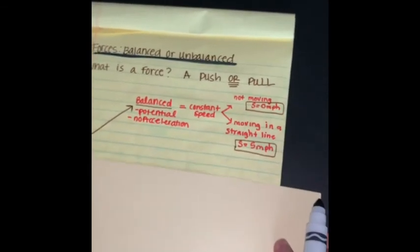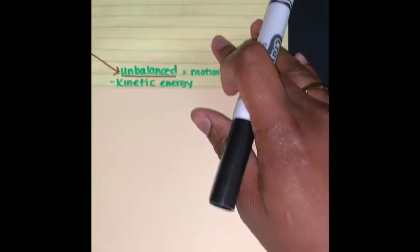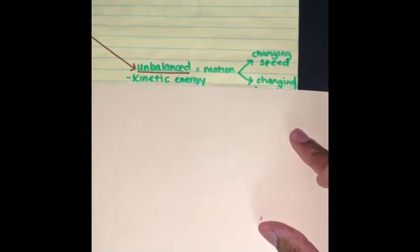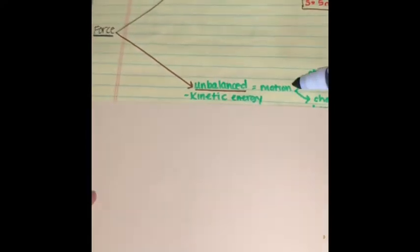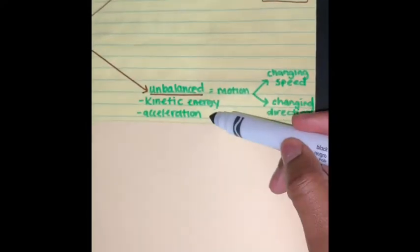Then, we will go down to the unbalanced force. An unbalanced force is basically the same as kinetic energy. Kinetic energy is energy in motion. That is where we get that motion. It also tells us that we do have an acceleration.